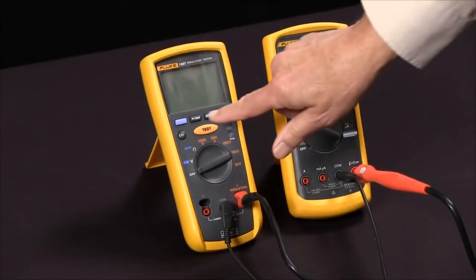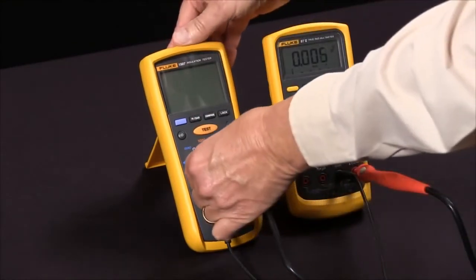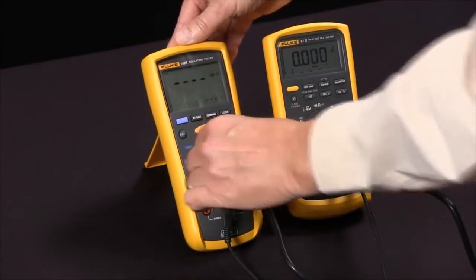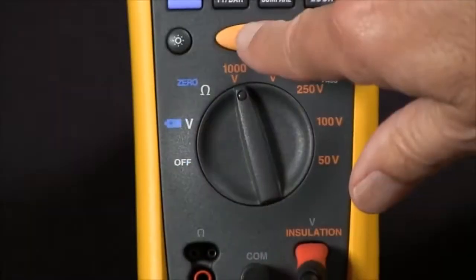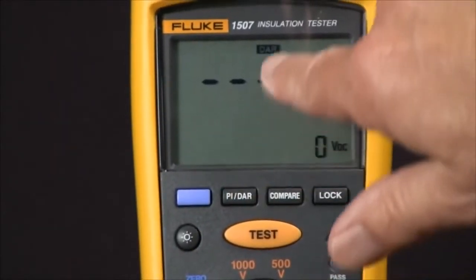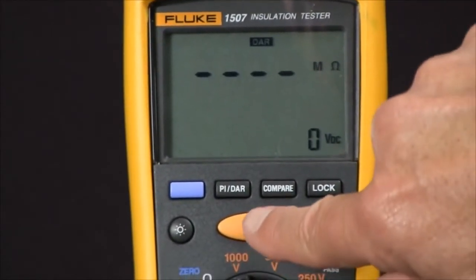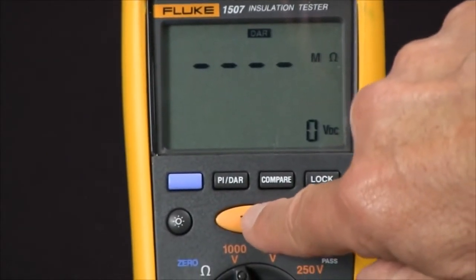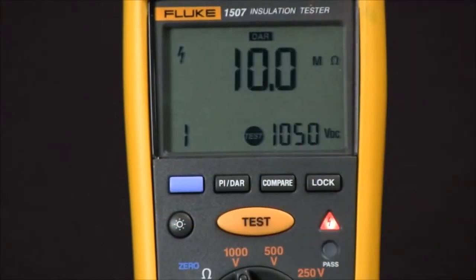We're going to pick 1,000 volts, so we rotate our selector knob to 1,000 volts. We select our test. In this case, I'm going to do DAR, dielectric absorption ratio, and I push the test button, and it begins the test.